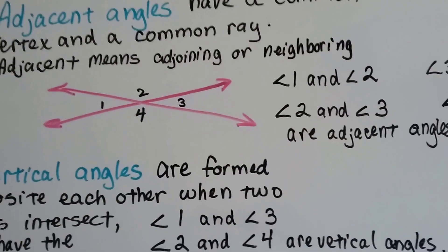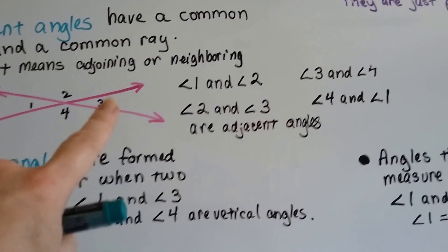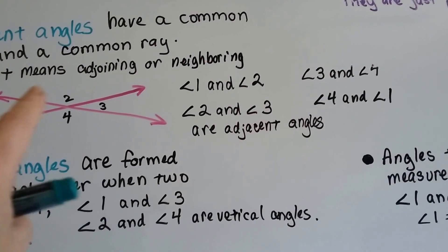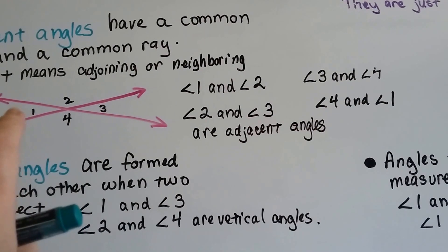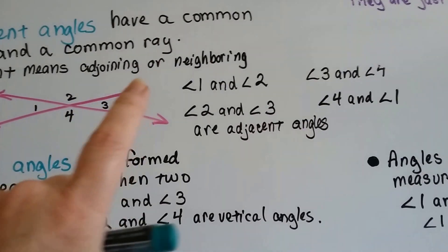So angles 1 and 2 are adjacent, and 2 and 3 are adjacent, and 3 and 4 are adjacent, and 4 and 1 are adjacent. And you can see the common ray that is in between the adjacent angles. For 2 and 3, here's the common ray.